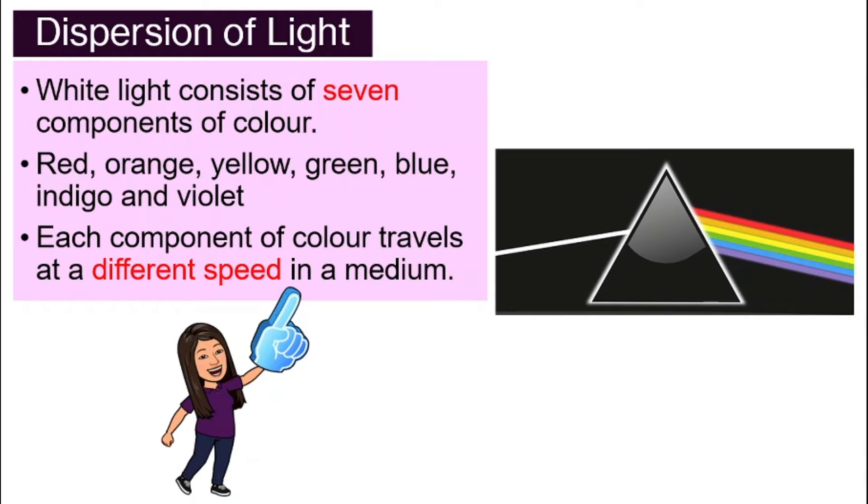Every component of those colors, they travel at a very different speed in a medium. That means red, orange, both of them travel at different speed in the glass prism. And also together with the rest of the components, they all have their own speed in the medium.